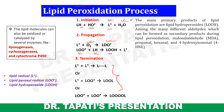Products of the lipid peroxidation process may be mutagenic or carcinogenic. The main primary product is lipid hydroperoxide (LOOH). Among the many secondary products are malonaldehyde (MDA), propanal, hexanal, and 4-hydroxynonenal (4-HNE).